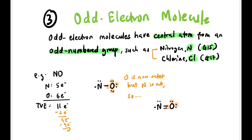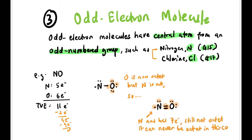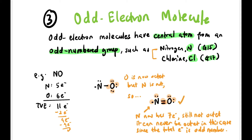We try our best by erasing one lone pair from N to make a double bond. Counting the electrons on N we get 7 — that's the best we can do. We can't go further without exceeding 8. So we accept this as an odd electron molecule.